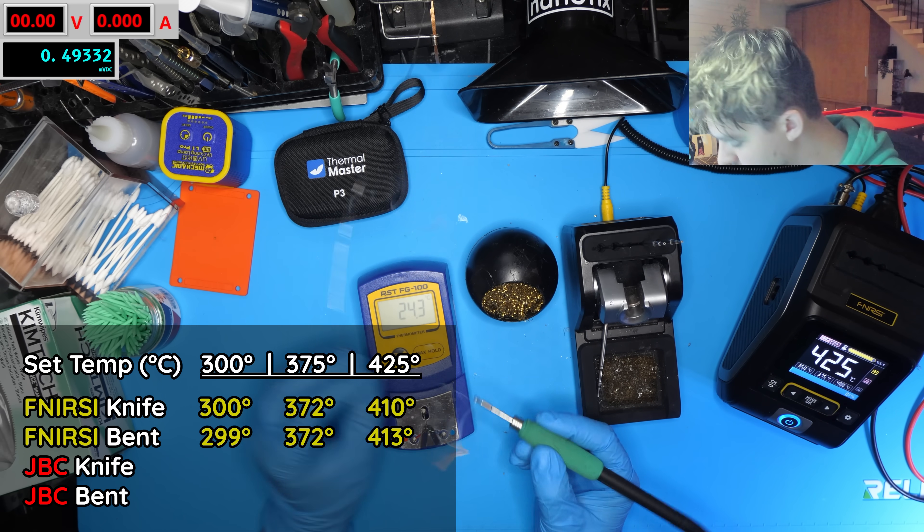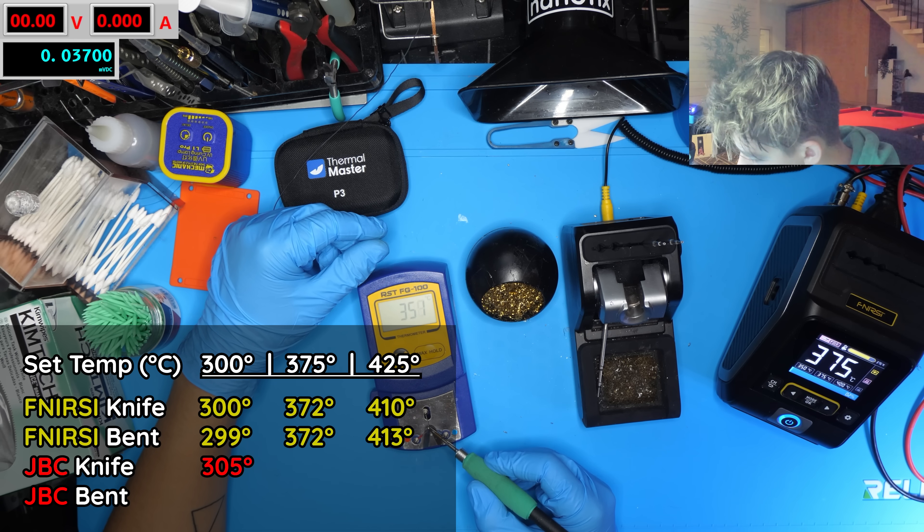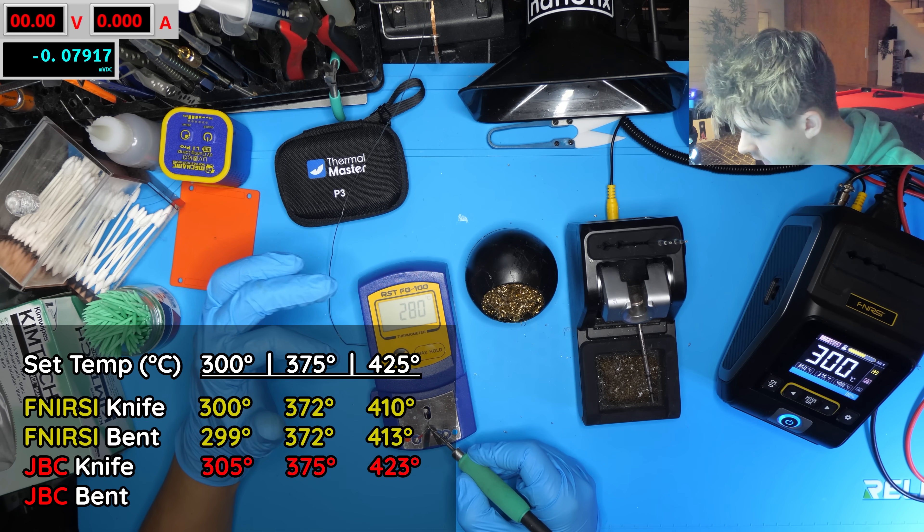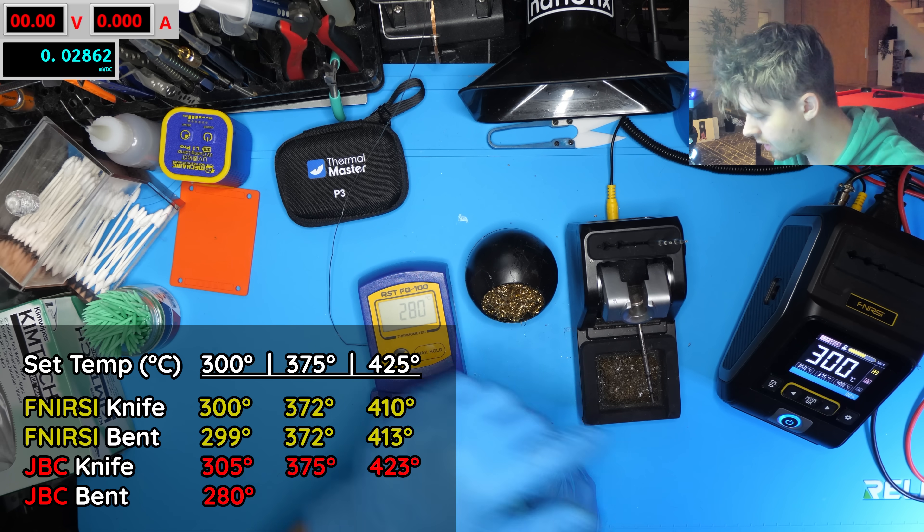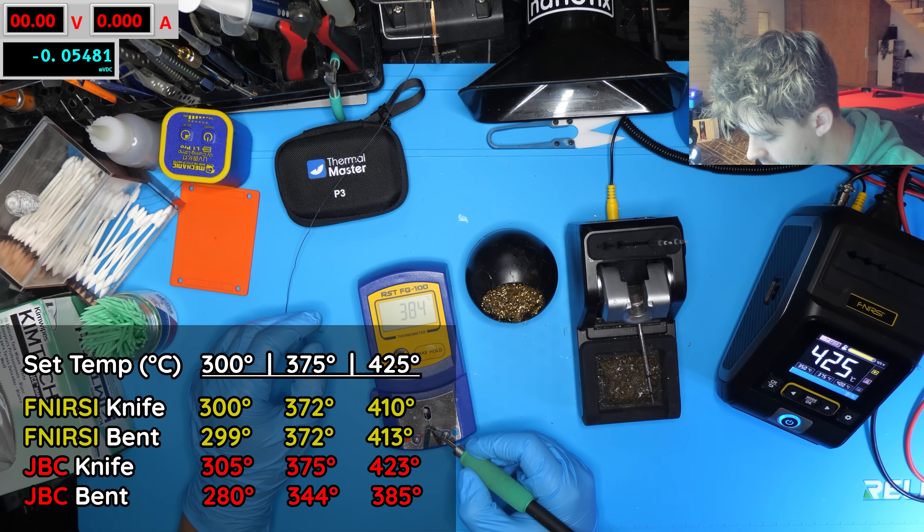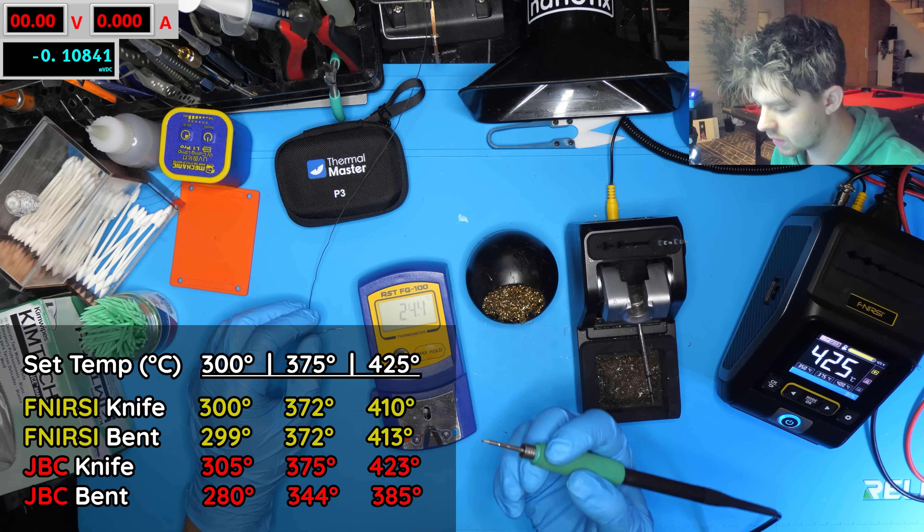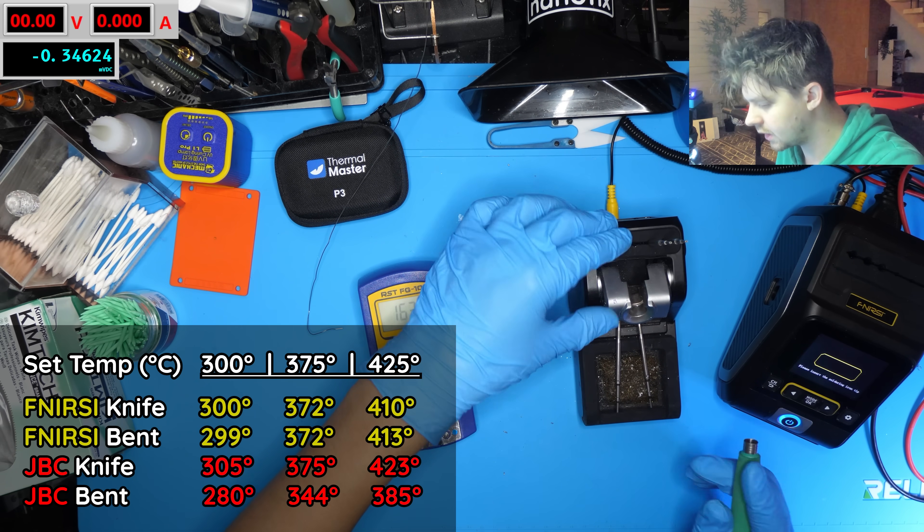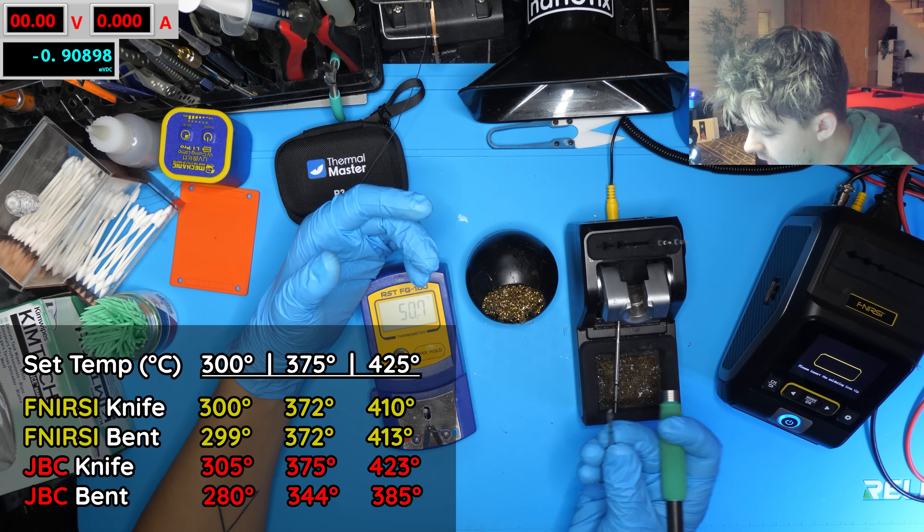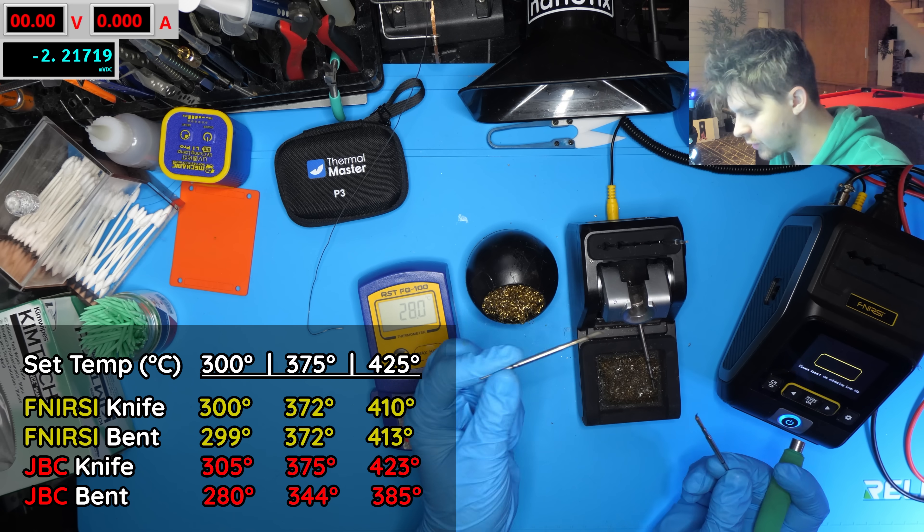Now I'll calibrate the iron one more time with the JVC knife tip. Let's try at the 300 mark - we're going to about 305 for the knife tip. What about at 375? Pretty spot on, 375. And then at 425 we get 423. So now the JVC bent conical and it looks like it's only getting up to 280 at 300. Let's go up to 375 - we're getting to 344. And now 425, we're only getting to 385. So kind of far off with the JVC bent conical honestly. The Furnersi tips take the W in this particular test because they are definitely closer to each other when it comes to the temperature readings.